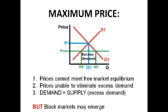A maximum price — the government might impose this on tickets, for example, because it wants everyone to be able to afford them. The maximum price always has to be set below the equilibrium price, otherwise it's no use. When there's a maximum price, prices simply can't meet the free market equilibrium, which means prices are unable to eliminate excess demand. Because prices are lower than the market equilibrium, there's more demand than supply — as you can see on the diagram, there's excess demand.